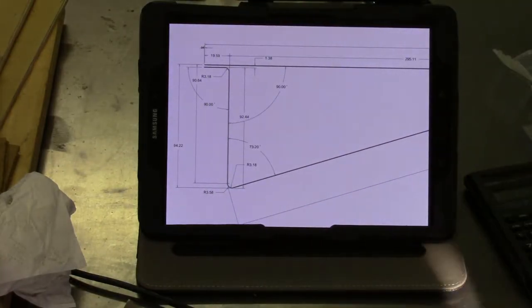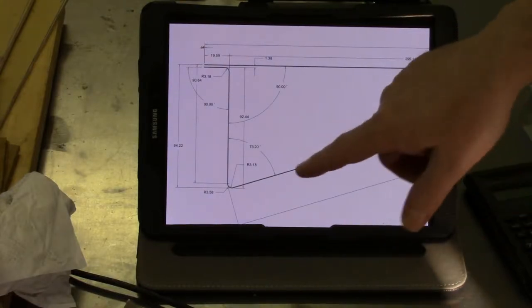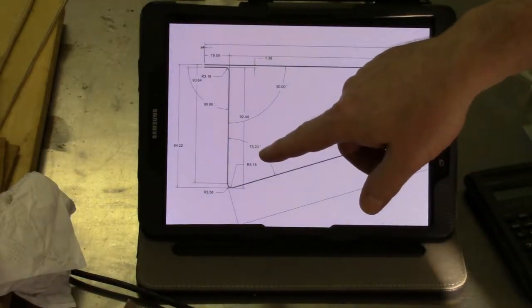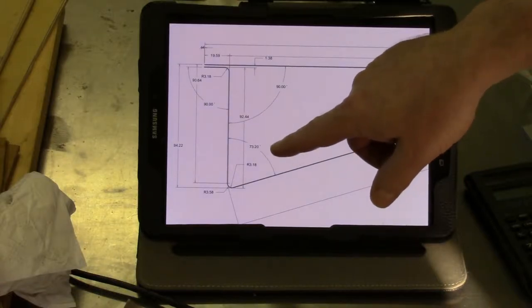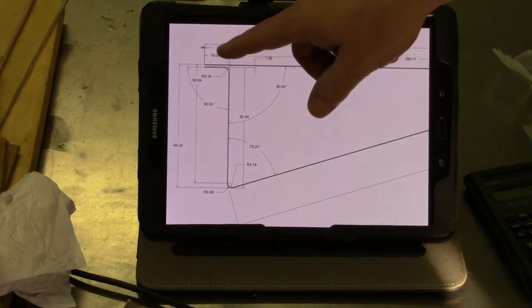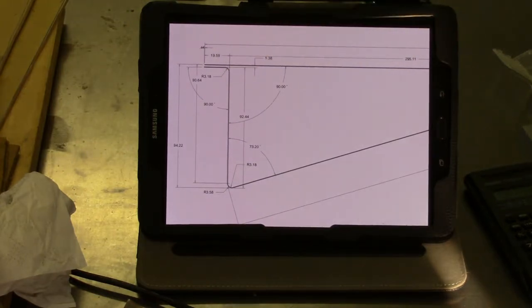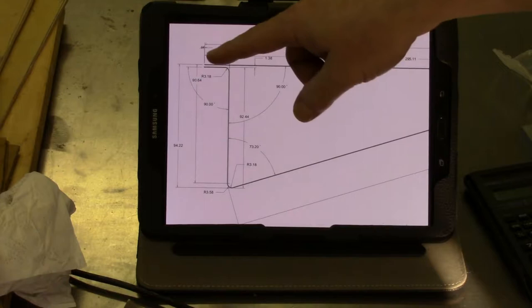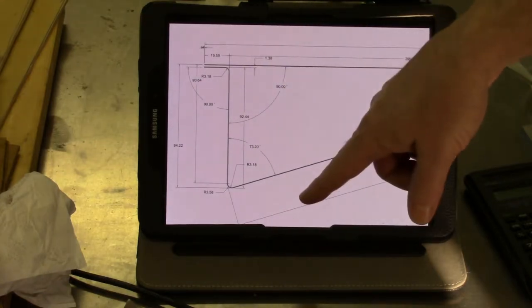I think probably what happened, of course, part of it may have been just the distraction of the video, of making the video, but the other thing is that I had neglected to actually indicate this angle right here of 73 degrees. For some reason, I got into my head probably a combination of doing the flaps, which did have 90 degrees, and also having done this bend, I got 90 degrees in my head.